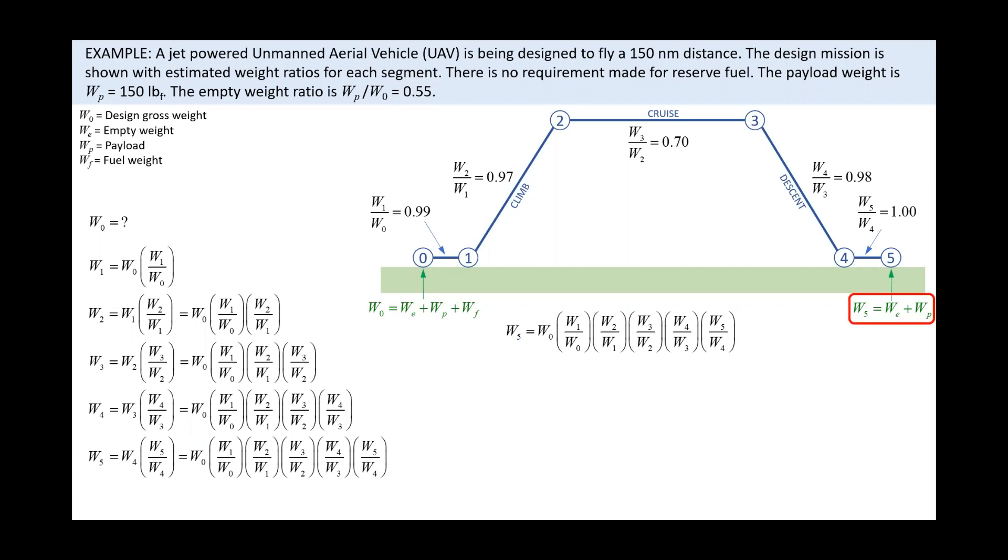Now, let's move this result over here for clarity and take a closer look. Recall we already know what the weight should be at node 5, namely it should equal the empty weight plus the payload. Let's write this explicitly here. We can now divide through this equation by W0. Note how this generates two additional weight ratios, the empty weight ratio and the payload weight ratio.